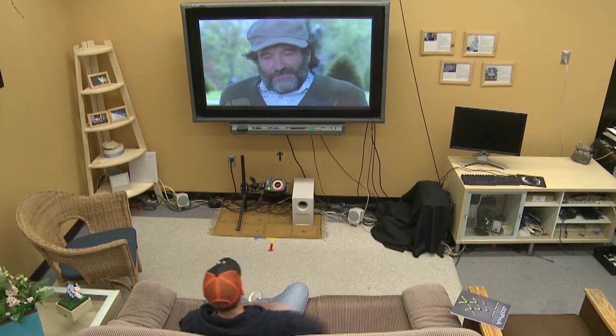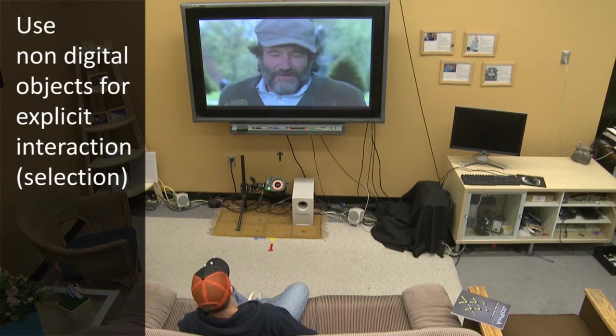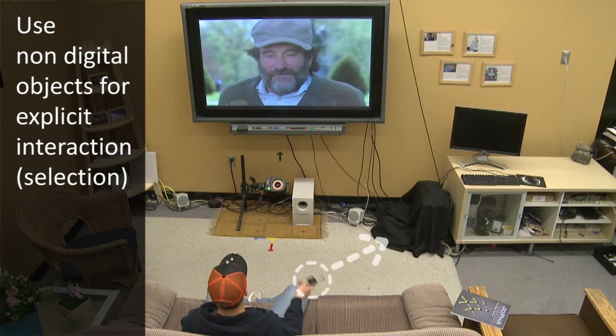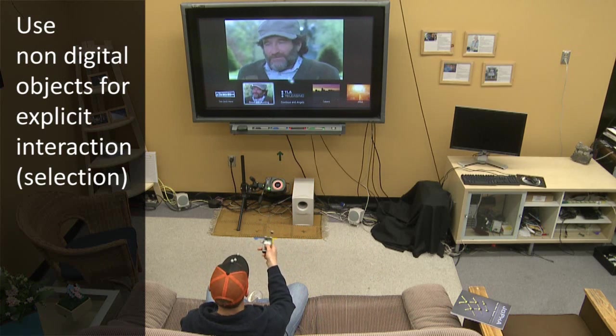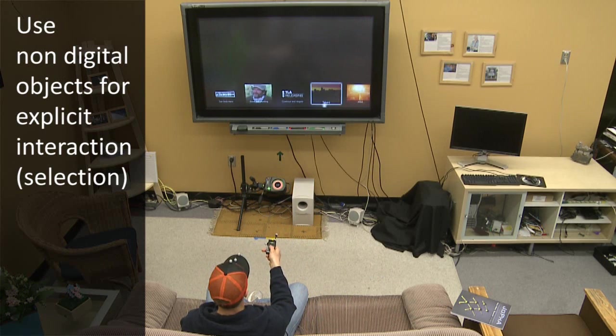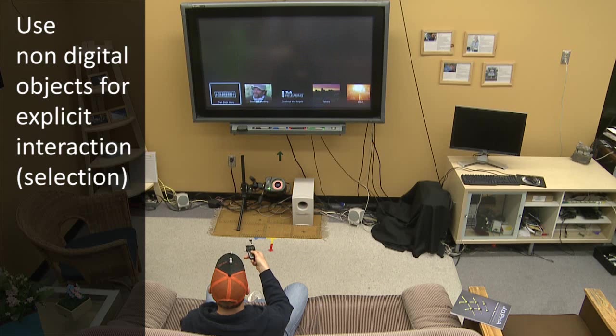A person pointing an object to the screen, like a phone, triggers explicit interactions, such as selecting videos from a distance.